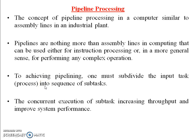The concurrent execution of subtasks increases throughput and improves system performance. If a particular complex task is divided into subtasks, the subtasks perform one by one, increasing the throughput ratio and system performance.